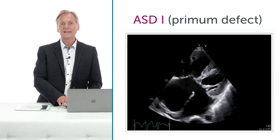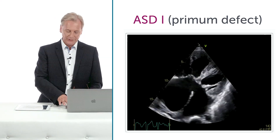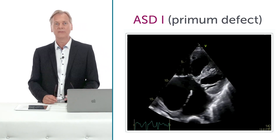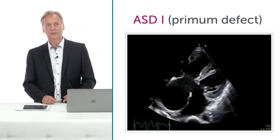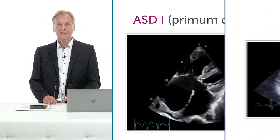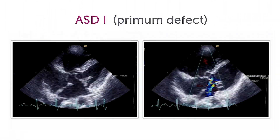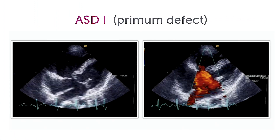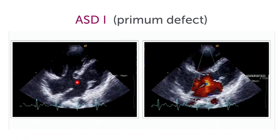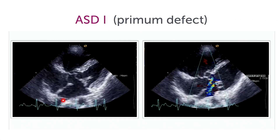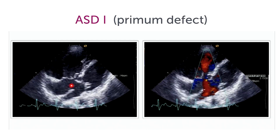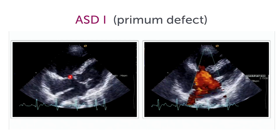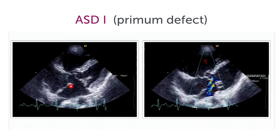This is the way an ASD1 looks, and it's usually very easy to differentiate it from an ASD2. Let's take a look at this patient here. You see again a large defect in the interatrial septum right close to the AV valves — again, a primum defect.